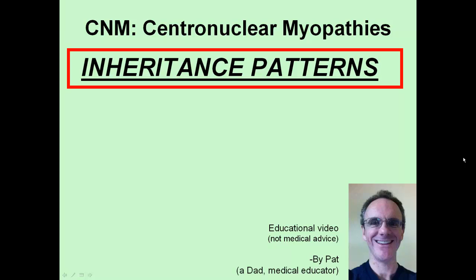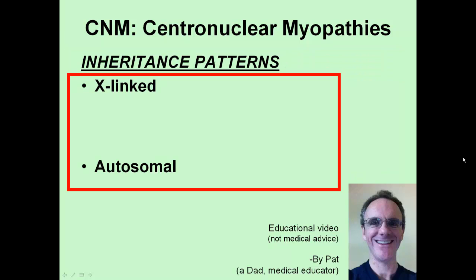This is the next in my series of educational videos on centronuclear myopathy, and particularly this video will focus on the inheritance patterns for the centronuclear myopathies. By inheritance, I mean the way that a condition is passed down from one generation to the next — the way that genes and chromosomes pass from parents to their offspring. In general within genetics, inheritance patterns are characterized as being either X-linked or autosomal.